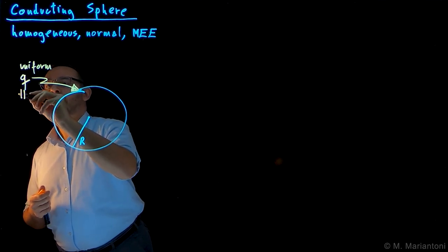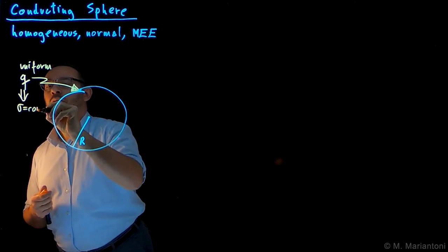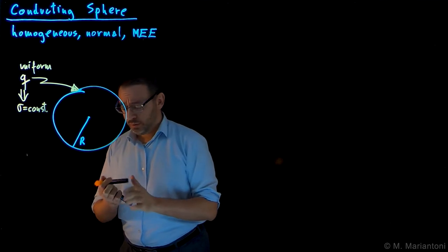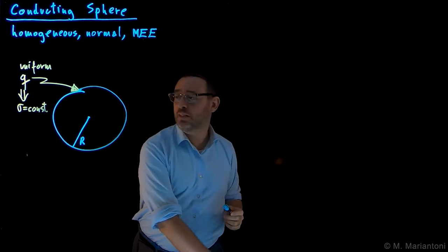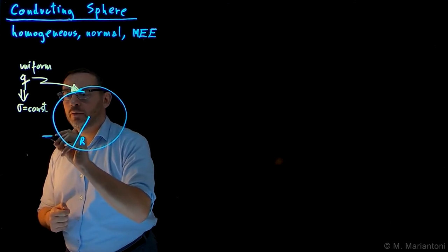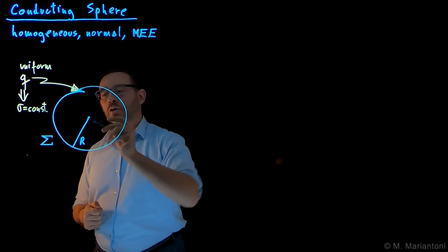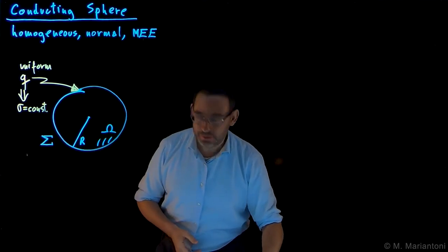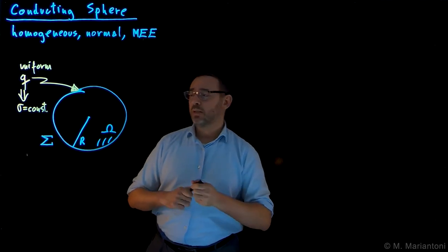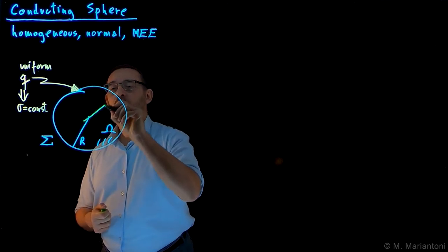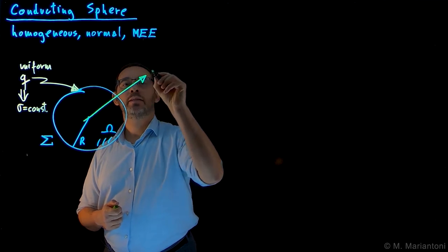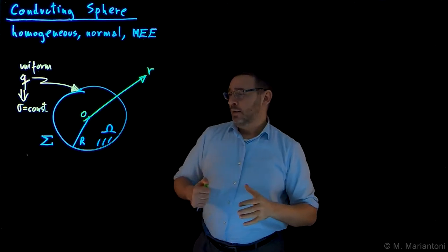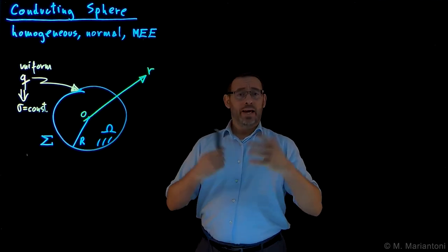This implies that if there is any surface charge density sigma on the surface of this sphere, it has to be a constant. The surface of this sphere we call capital Sigma, and the volume we call capital Omega. We choose a suitable coordinate system, which in this case is a spherical coordinate system where this is the radial direction and this is the origin. This is a system with spherical symmetry.